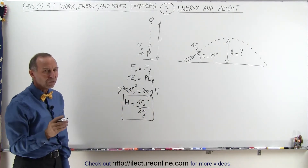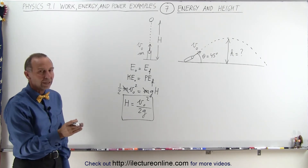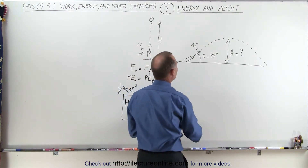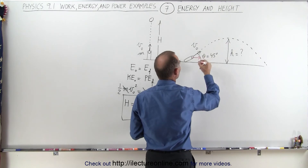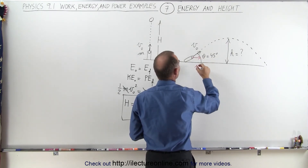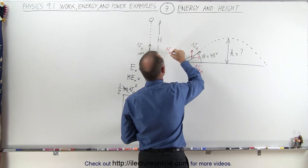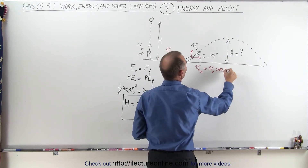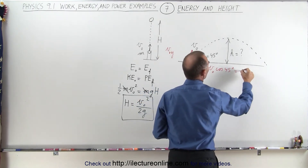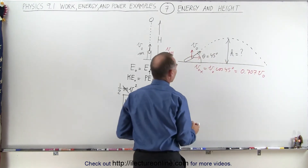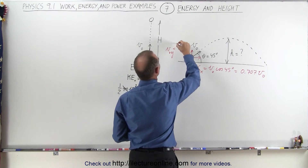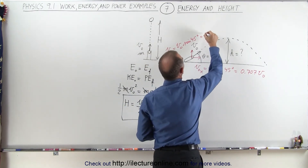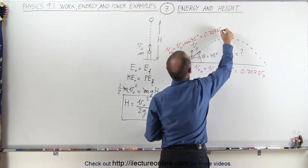Now let's do the same for the 45-degree case. We can separate the kinetic energy in the x direction and the kinetic energy in the y direction. We take the initial velocity and divide it into the initial velocity in the x direction and the initial velocity in the y direction. The initial velocity in the x direction will be v-initial times cosine of 45 degrees, which equals 0.707 times v-initial. Similarly, v-initial in the y direction will be v-initial times sine of 45 degrees, which also equals 0.707 times v-initial.